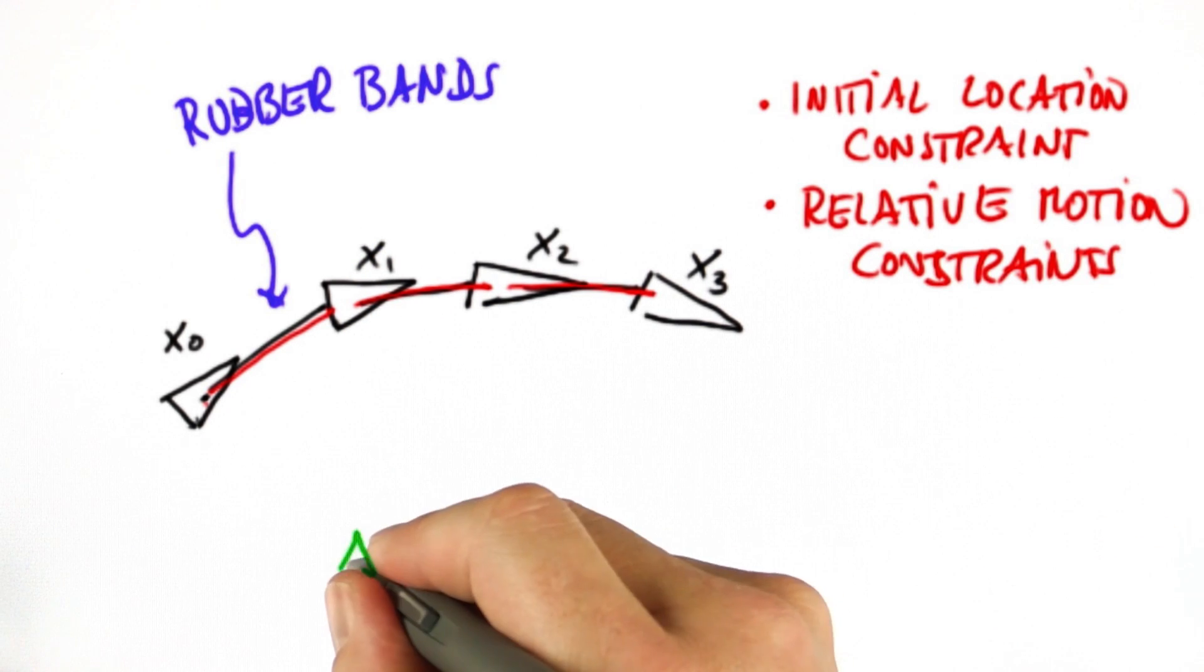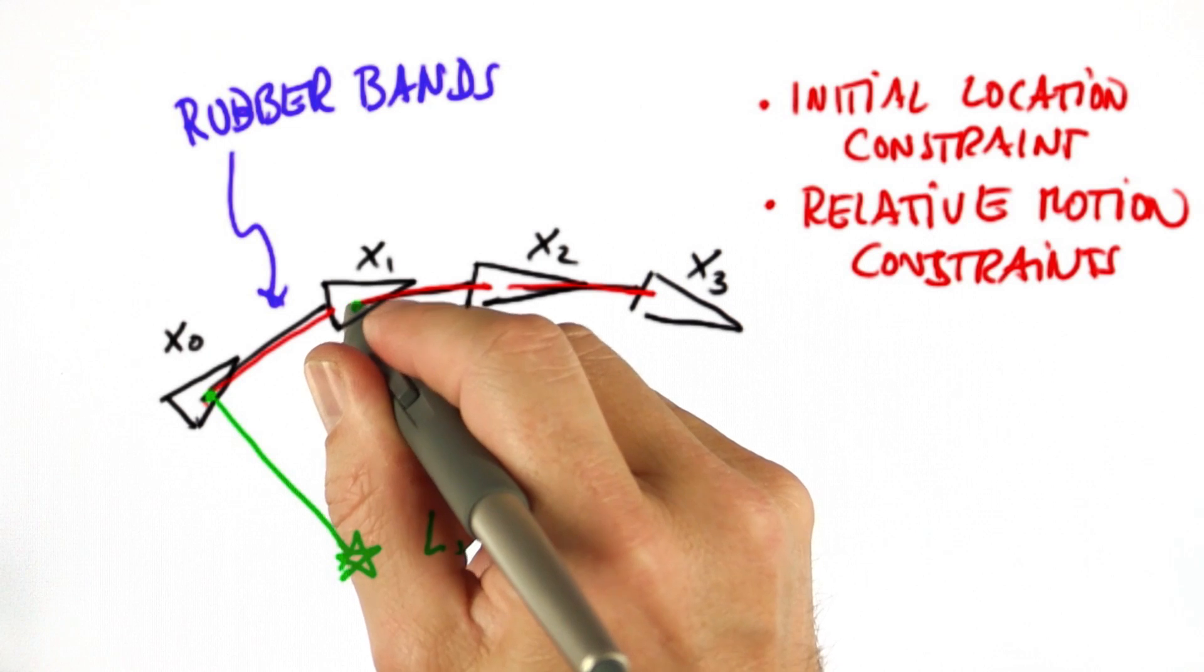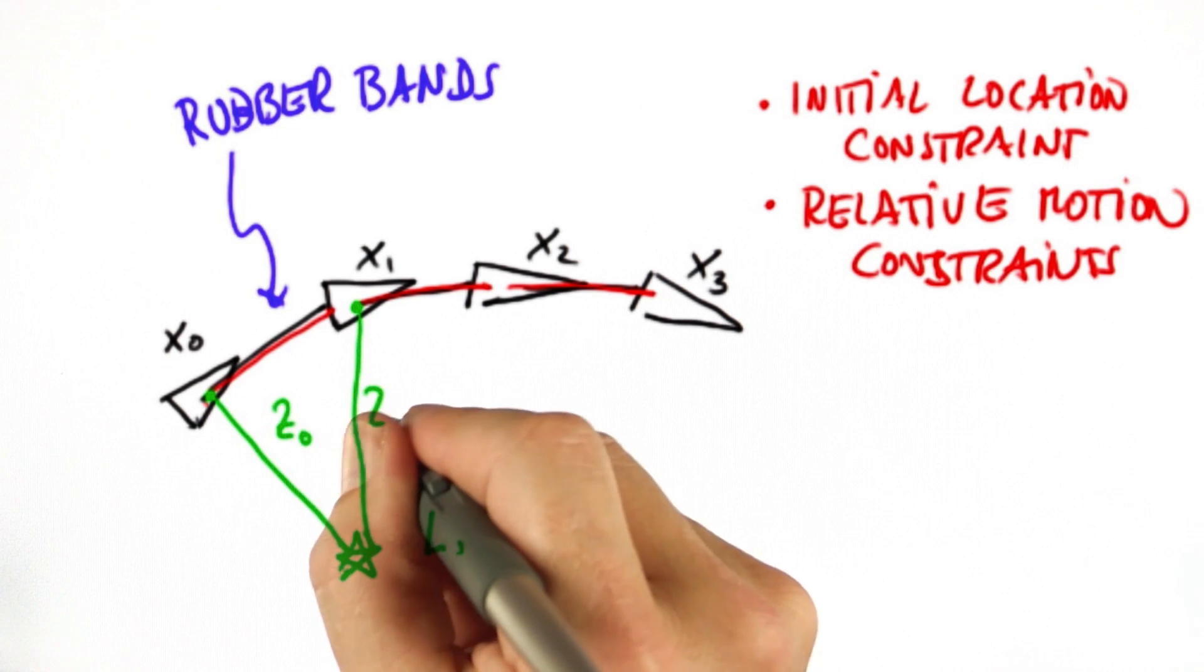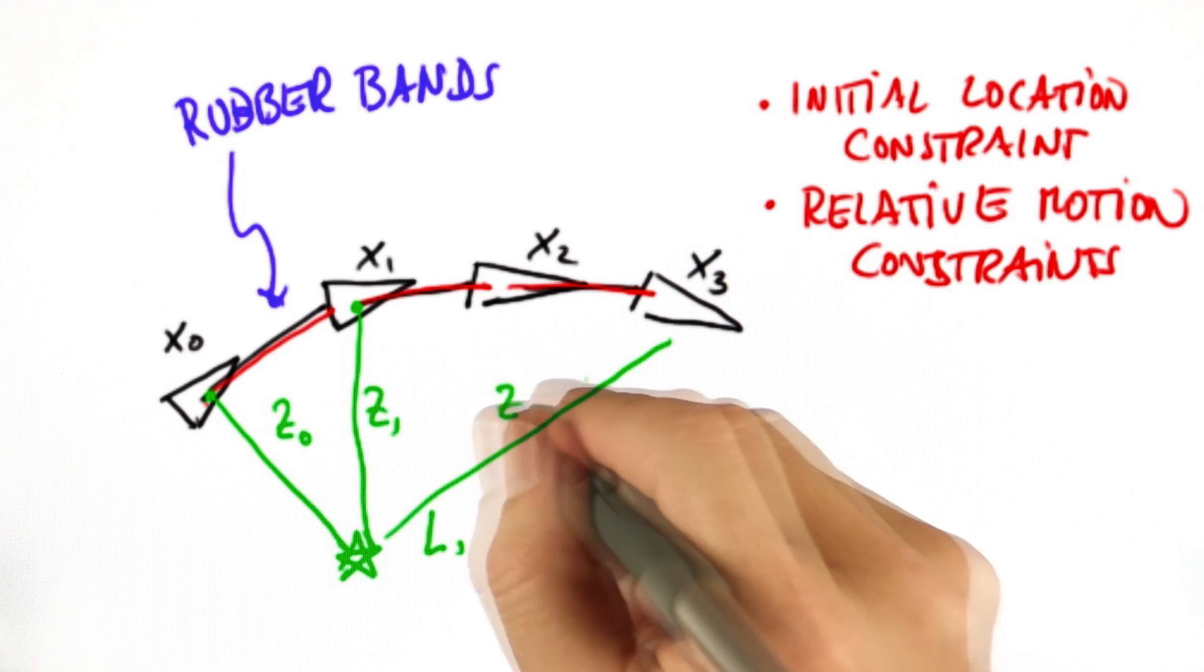And speaking about maps, let's use landmarks as an example. So suppose there's a landmark out here, and the landmark is being seen from the robot with some relative measurement z1, perhaps I didn't even see it during time 2, but then this is z3.